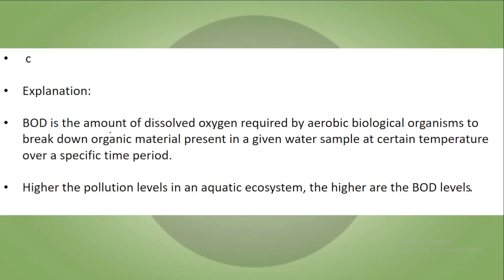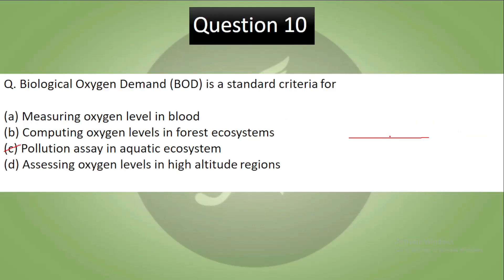Biological Oxygen Demand is the amount of dissolved oxygen required by aerobic bacteria to break down organic materials present in a given water sample at a certain temperature over a specific period of time. Higher pollution levels in the aquatic ecosystem mean higher BOD levels. Where drains meet rivers, BOD increases significantly, and aquatic life is scarce because oxygen levels drop — that is why less aquatic life is found near drain outfalls into rivers.